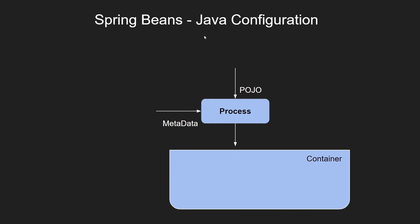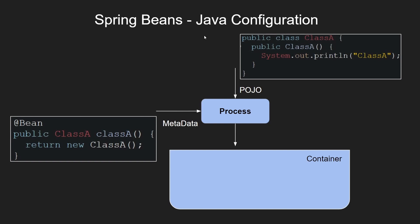This is an example of Java configuration. The POJO class here is class A, and the metadata is annotated with the @Bean annotation on a method, and this method returns a new instance of this class. The method has to be written in a class annotated with @Configuration. Using these two pieces of information, the Spring container initializer creates an object of class A.